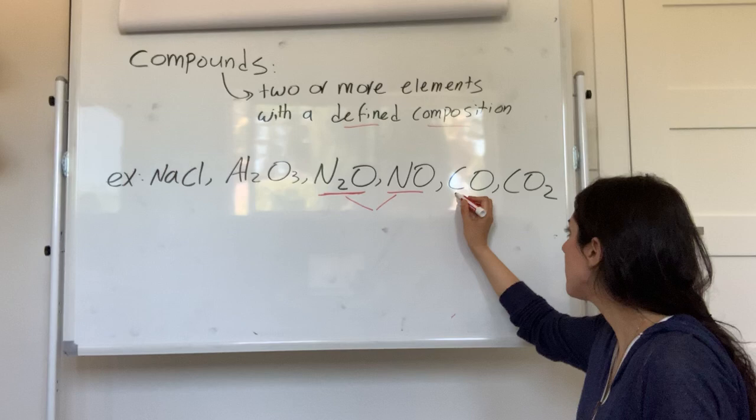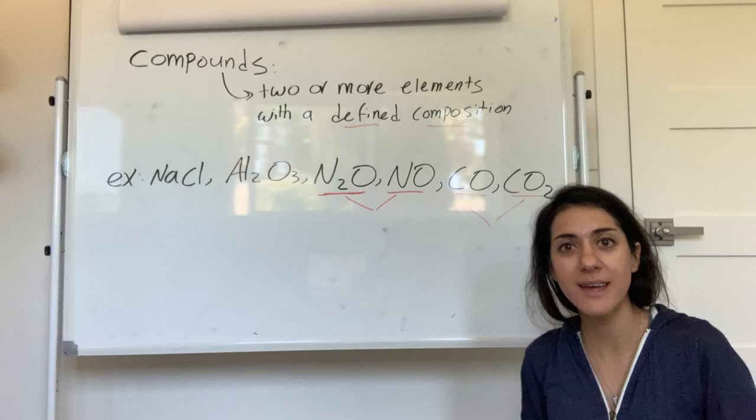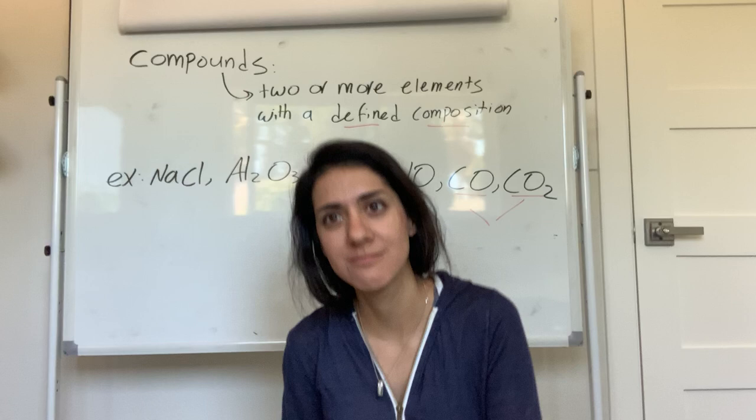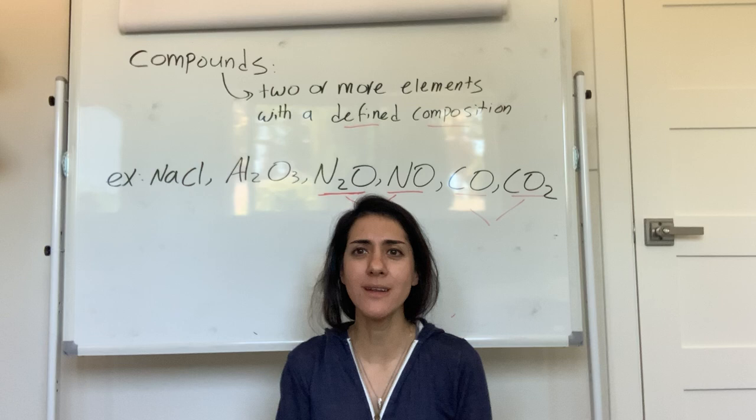The other example I want to talk about is carbon monoxide and carbon dioxide. Everyone thinks they're the same because they both have carbon and oxygen, but they're not — one has an extra oxygen, and that makes a difference. Granted, they both can kill you, but in different ways. Carbon monoxide is poisonous and carbon dioxide is toxic.